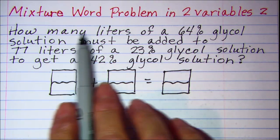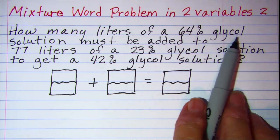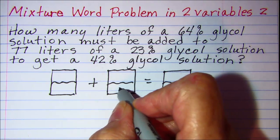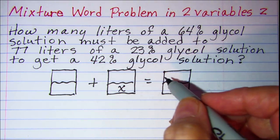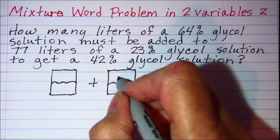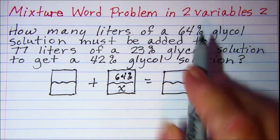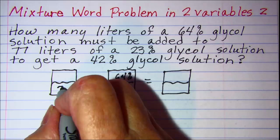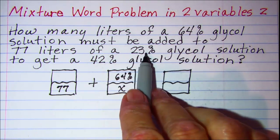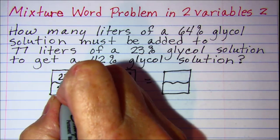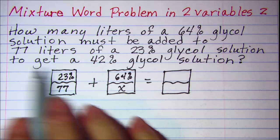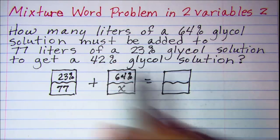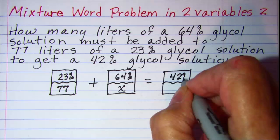Now our question is how many liters of a 64% glycol solution must be added to, so I don't know how many liters, so I'll use x for that amount, but I do know that it's a 64% glycol solution. And it's being added to 77 liters of a 23% glycol solution to get a final solution. This is my final solution, which is 42% glycol solution.